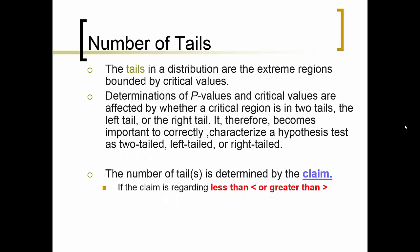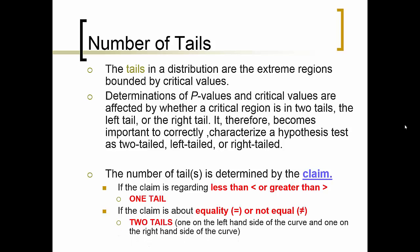The tails in a distribution are the extreme regions bounded by critical values. Determinations of P values and critical values are affected by whether a critical region is in two tails, a left tail, or a right tail. It is very important to correctly characterize a hypothesis test as being two-tailed, left-tailed, or right-tailed. The number of tails is determined by the claim: if the claim is less than, we'll have a left-tailed test; if the claim is greater than, we'll have a right-tailed test; if the claim is about equality, then we have a two-tailed test.